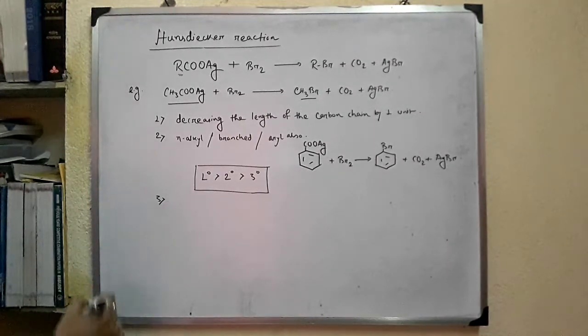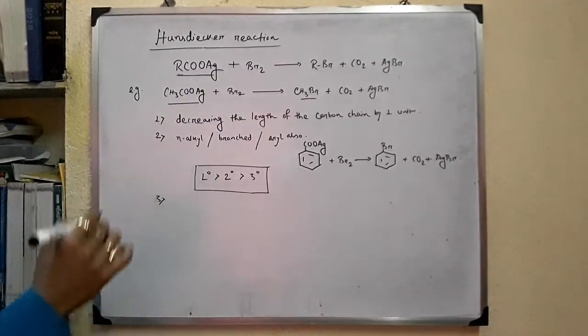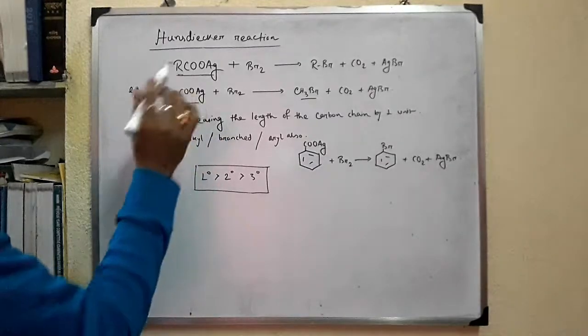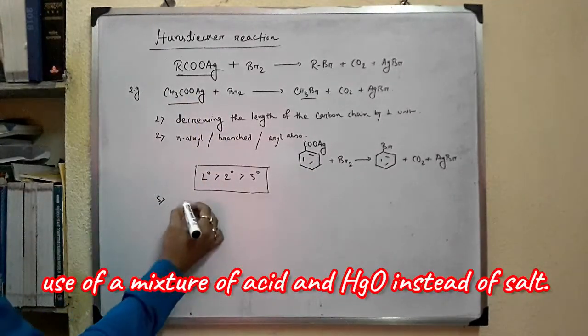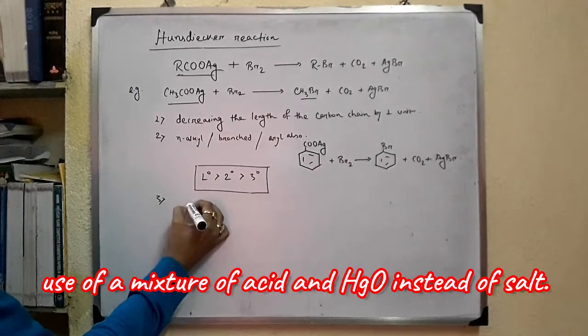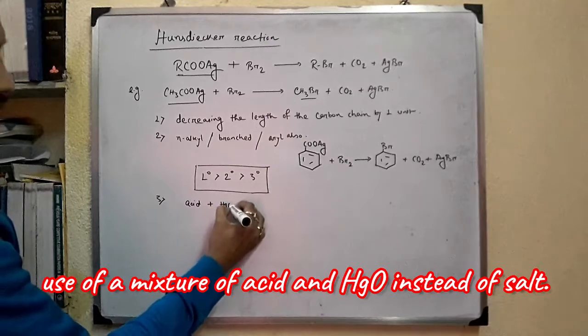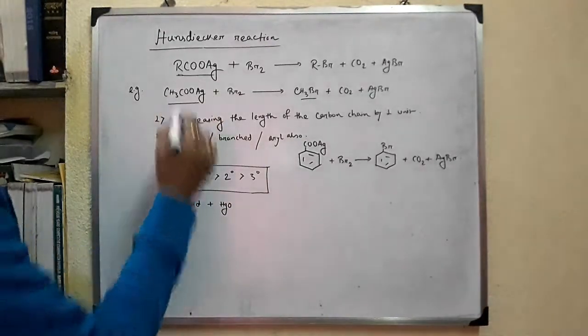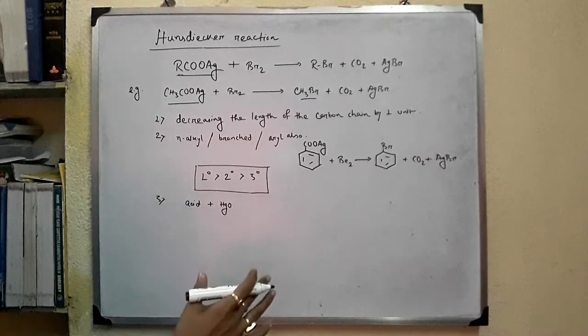Point number 3: This silver salt must be very pure and dry. And it is not that easy to prepare such salts. So, a convenient way is the use of a mixture of acid and HgO, which is mercuric oxide, instead of the salt. And these two react similarly.